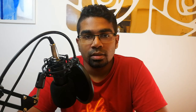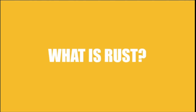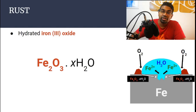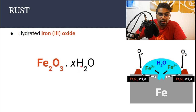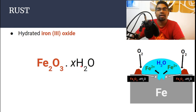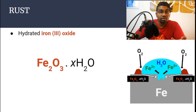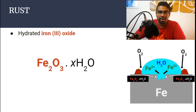Before we look at the process of rusting, have you ever asked yourself: what is rust? Rust is simply hydrated iron-3 oxide. Iron-3 oxide is Fe2O3. X represents a variable number of water molecules that surround the iron-3 oxide. And iron-3 oxide is a reddish brown color — that's what gives rust its reddish brown color.